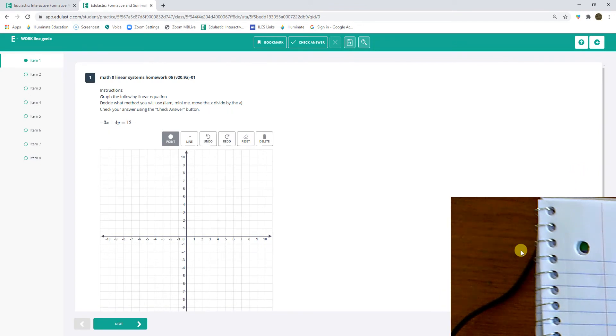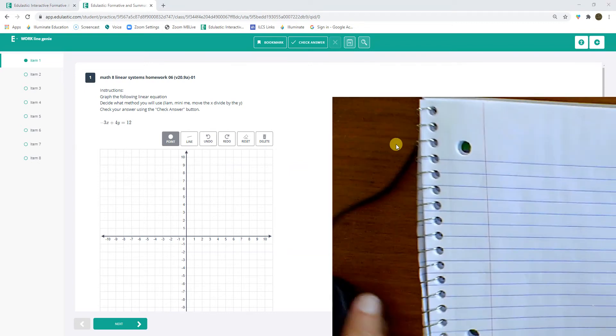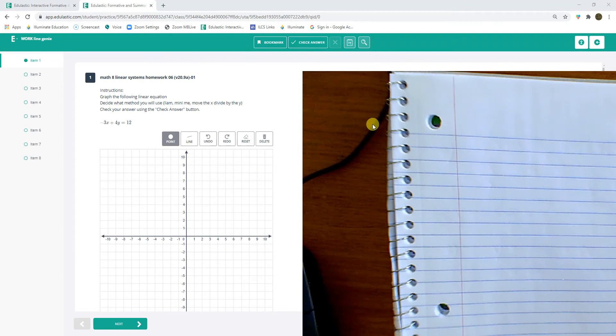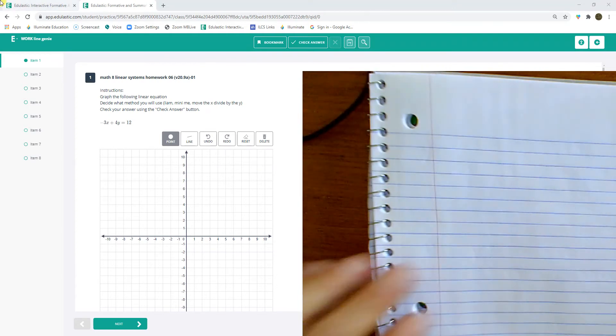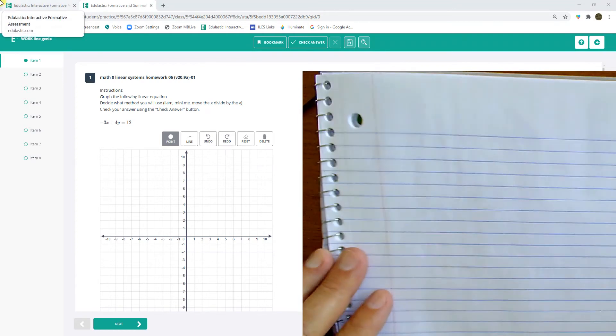Graph the following linear equation, decide what method you will use, and check it with the answer key. Okay, so this first one I'm going to use mini-me's on it. Are you with me on mini-me's?